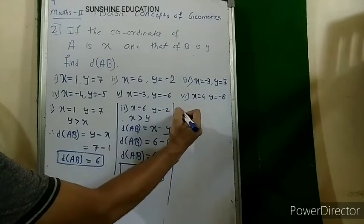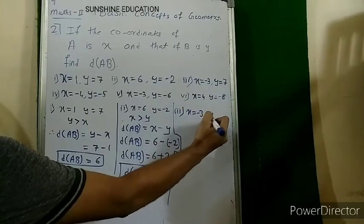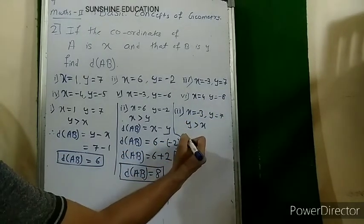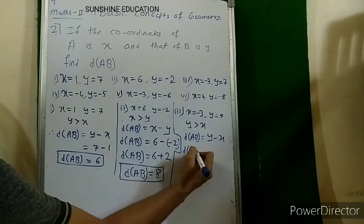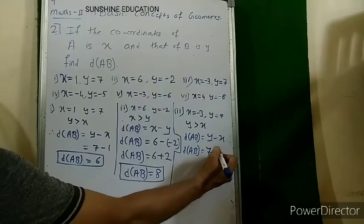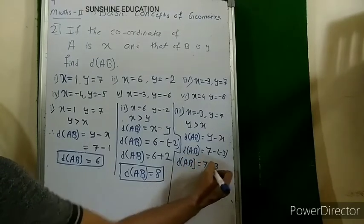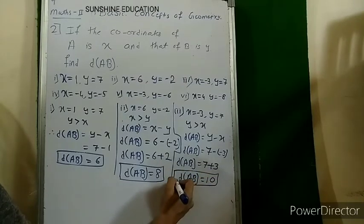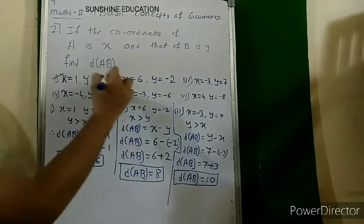Third sub-question: x = minus 3 and y = 7. Since y is positive and x is negative, y is greater. Distance AB = y minus x = 7 minus (minus 3) = 7 plus 3 = 10. So the three answers are: first is 6, second is 8, and third is 10.